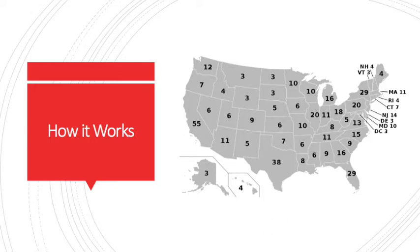You're voting for your state's electors. These electors, who are actual people, come together 41 days after the popular election and cast their votes for the president. So all the electors from a certain state vote for the same candidate, whoever won the popular election in their state.